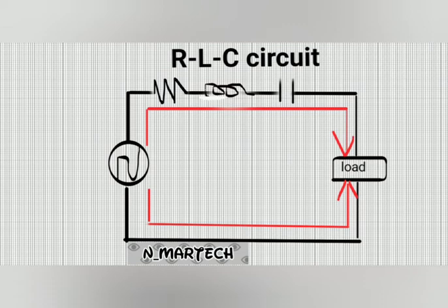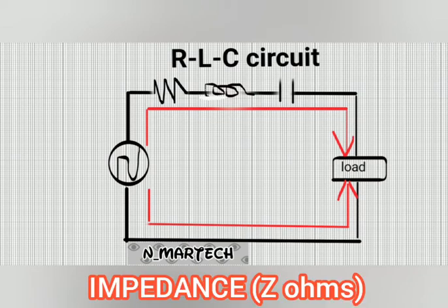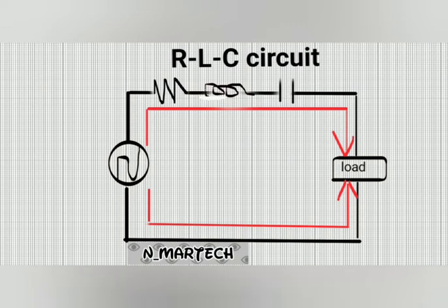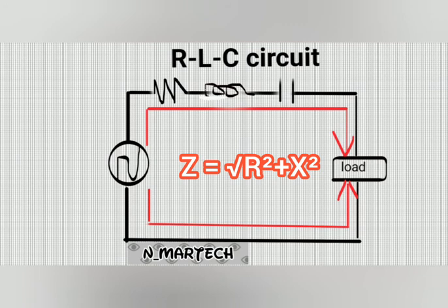In an RLC circuit, there is a combination of both resistive and reactive elements of opposition to the flow of current. This combination is known as impedance. It is also measured in ohms and represented with the letter Z. Impedance has real and imaginary parts — resistance is the real part while reactance is the imaginary part.